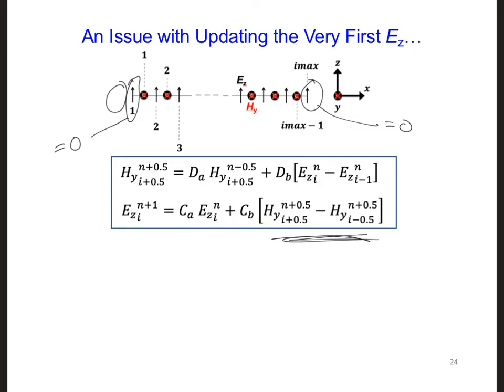Finally, in this second section of the code, we need to add a source to our simulation. Since we're initializing both of the E_z and H_y arrays to 0 at the beginning of the simulation, these two arrays are going to stay 0 over all time steps unless we add a source somewhere.